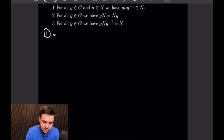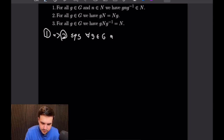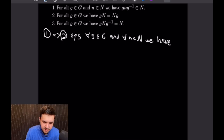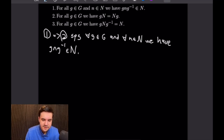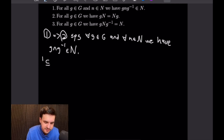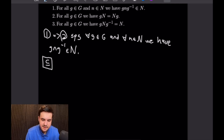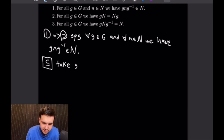Let's start with 1 implies 2. We begin by supposing condition 1: for all g in G and all n in N, the conjugate gng⁻¹ is in N. What we want to prove is that the left coset gN equals the right coset Ng. We'll show these two sets are equal using double inclusion. For the forward inclusion, we show gN is a subset of Ng. Take an element gn from the left coset gN.